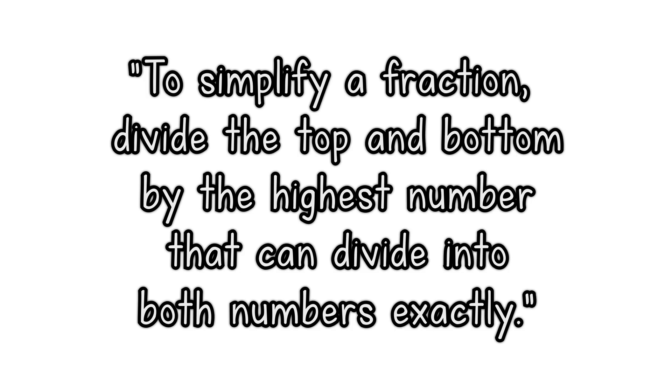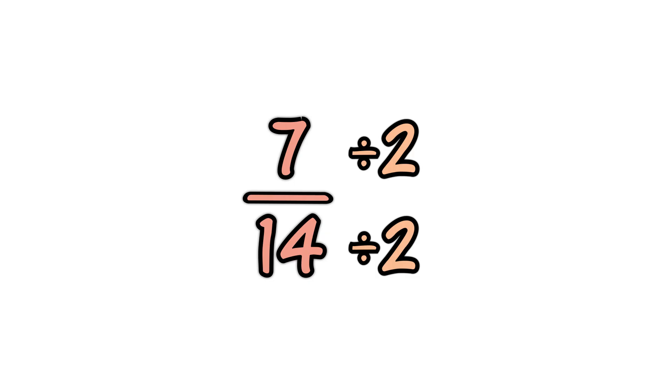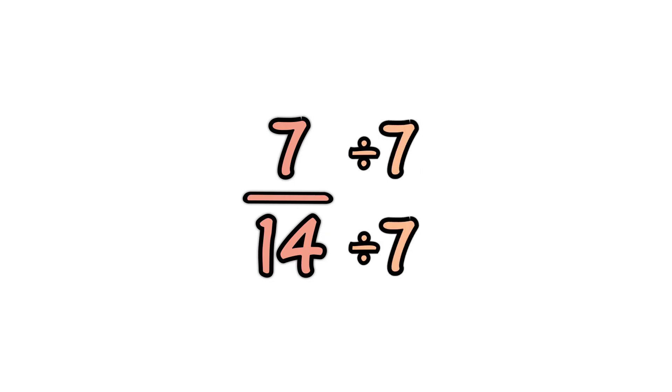How do I simplify a fraction? There are two ways to simplify a fraction. Method 1: try dividing both the top and bottom of the fraction until you can't go any further — try dividing by 2, 3, 5, 7, etc.